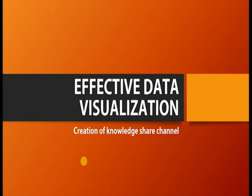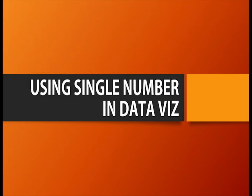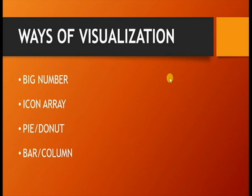In the effective data visualization, the first portion is the single number. The single number is visualized by the data, and you can see the name of the data. The single number is not alone.